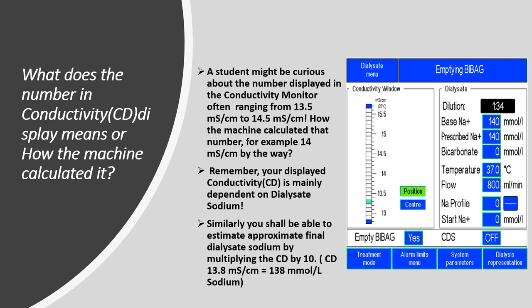The displayed conductivity is mainly dependent on dialysate sodium — when you increase sodium, conductivity also increases, and when you decrease dialysate sodium, conductivity decreases. You can estimate approximate dialysate sodium using a simple formula: multiply your conductivity by 10. For example, if your displayed conductivity is 13.8 millisiemens per centimeter, the estimated dialysate sodium will be approximately 138 millimole per liter.